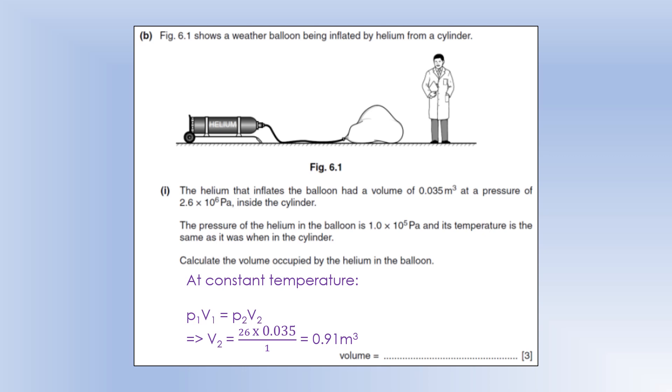So if we want to know the volume at the end, we're going to divide both sides by the initial pressure. Now, I've cancelled out the times 10 to the 5, so the bottom line should read 1 times 10 to the 5, and the top line 2.6 times 10 to the 6, but I've just cancelled those out already. We don't need to fuss with them. And when we do the calculation, we get 0.91 meters cubed.